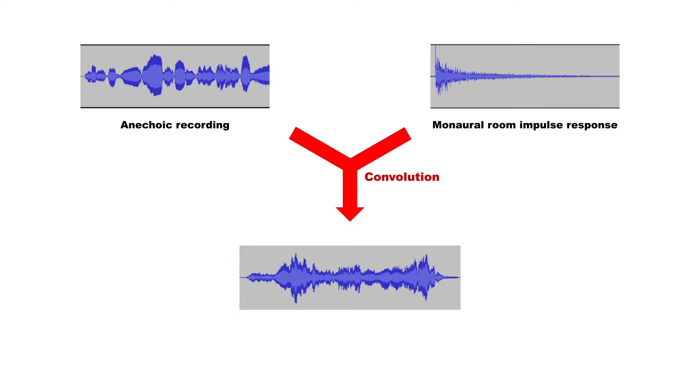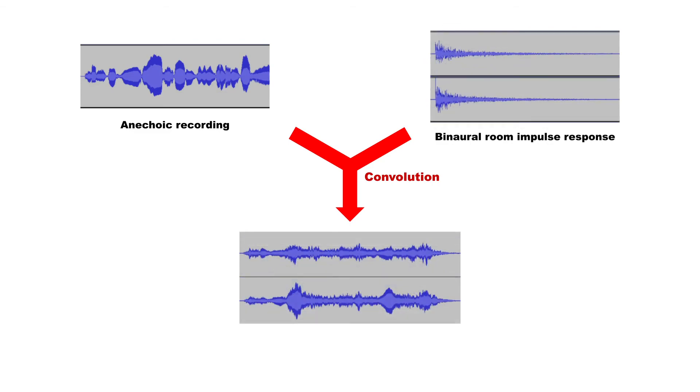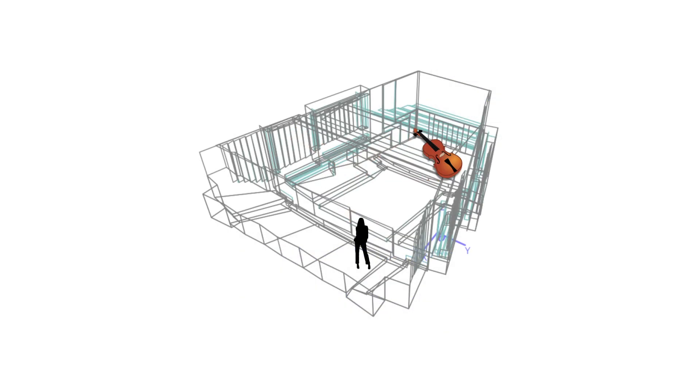This is not yet a binaural auralization. For that, we need to convolve with the binaural impulse response instead, in order to also include the factor of human perception. Here, the anechoic recording is convolved individually with each channel of the binaural room impulse response, yielding a new two-channel signal. And this audio is what we call an auralization. So, the auralization would be a realistic simulation of how the anechoic recording would sound in the room, as if we were standing in the receiver position and facing the receiver's specified direction.